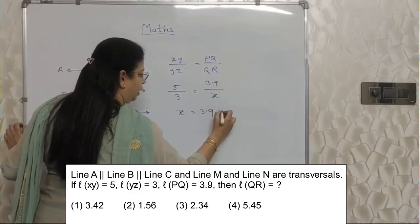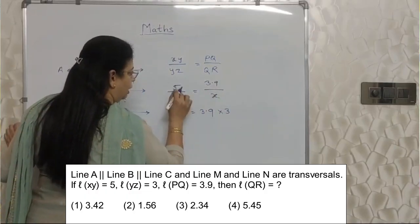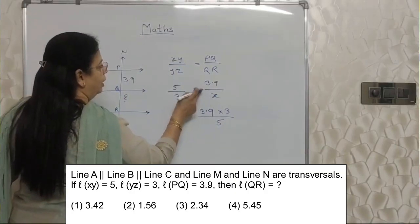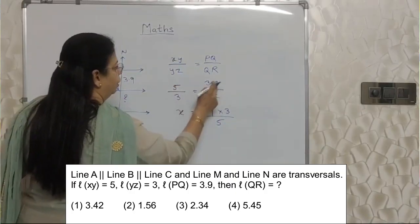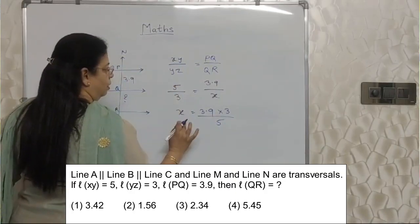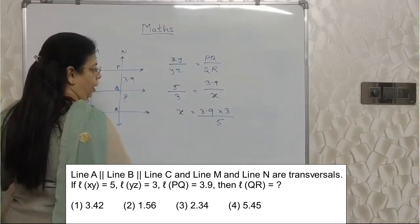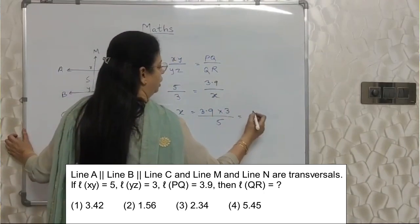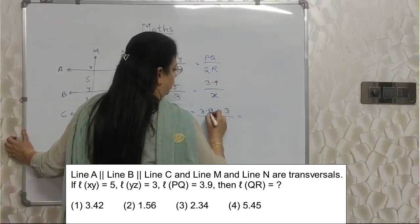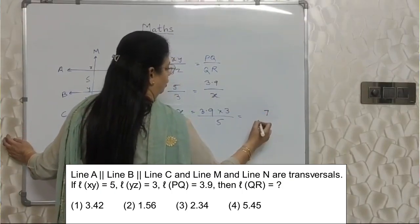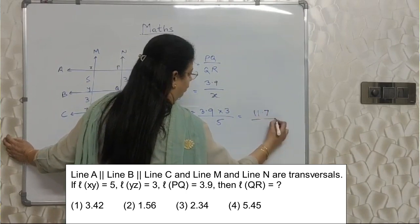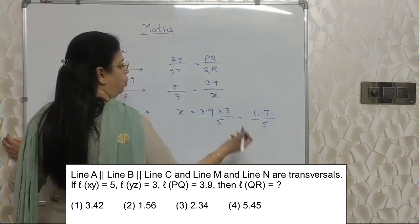So x will be on top, 3.9 is already on this side. This 3 we will bring here — into 3. And this 5 we will bring it down. So x is alone. Now let's compute: 3.9 into 3. Nine threes are 27, three threes are 9 plus 2 is 11. So that gives 11.7 upon 5.